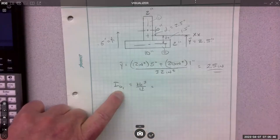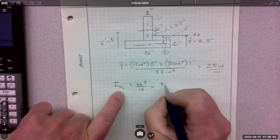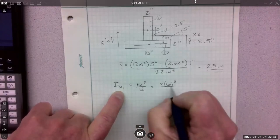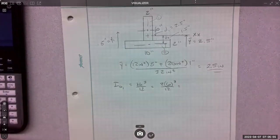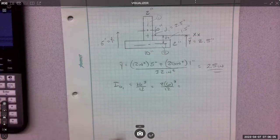And that's base height cubed over 12 for a rectangle. You know, if it's a structural shape, you're just going to look it up. The base is two, the height is six cubed over 12. You see what that is. It's like it's 36.